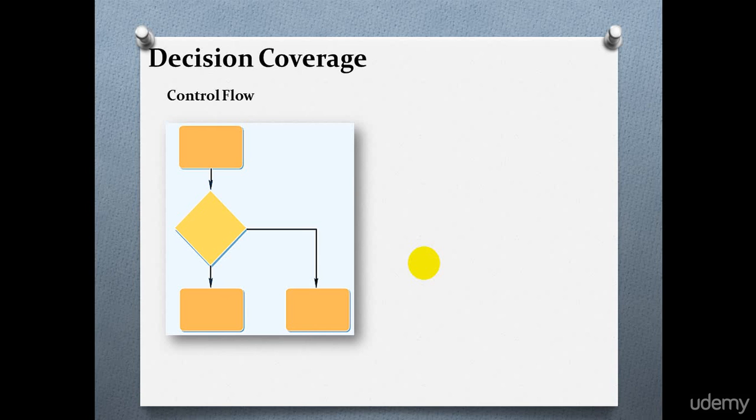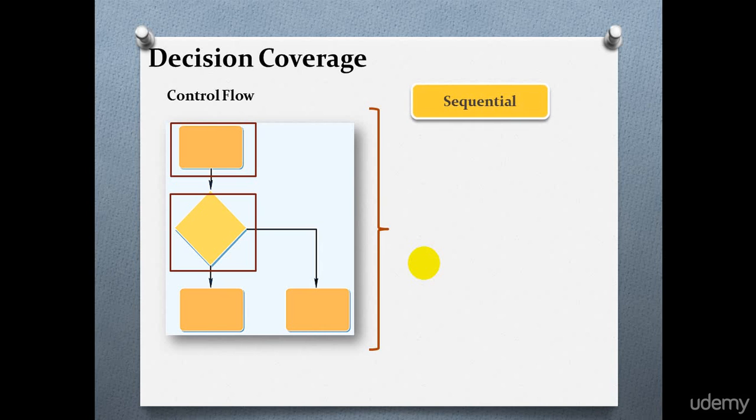A control flow diagram uses two symbols to represent code structure: a rectangle and a diamond. Sequential statements are represented by rectangles, and decision statements are depicted by diamonds. Control flow diagrams can be used to depict sequential structure, selection or decision, and iteration.